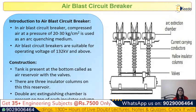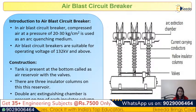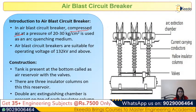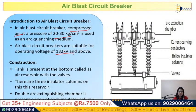Next is the Air Blast Circuit Breaker. While the air circuit breaker uses atmospheric air, the air blast circuit breaker uses compressed air as the arc quenching medium at a pressure of 20 to 30 kg/cm². This type of circuit breaker is suitable for operating ranges of 132 kV and above.